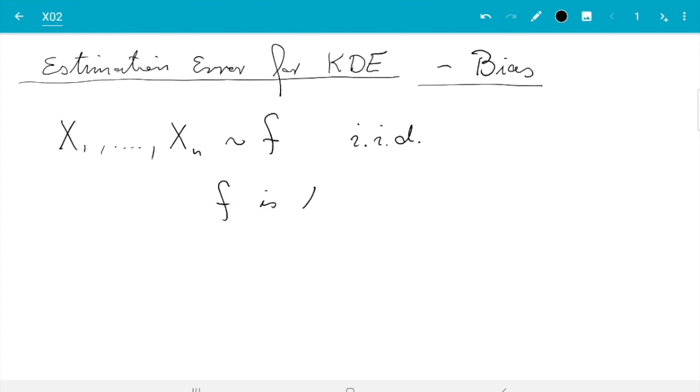So, f is the unknown, I write that in quotation marks, parameter. And because many people will not accept this as a parameter, it is not a vector of numbers, this is sometimes called non-parametric estimation. But still, we want to estimate f.